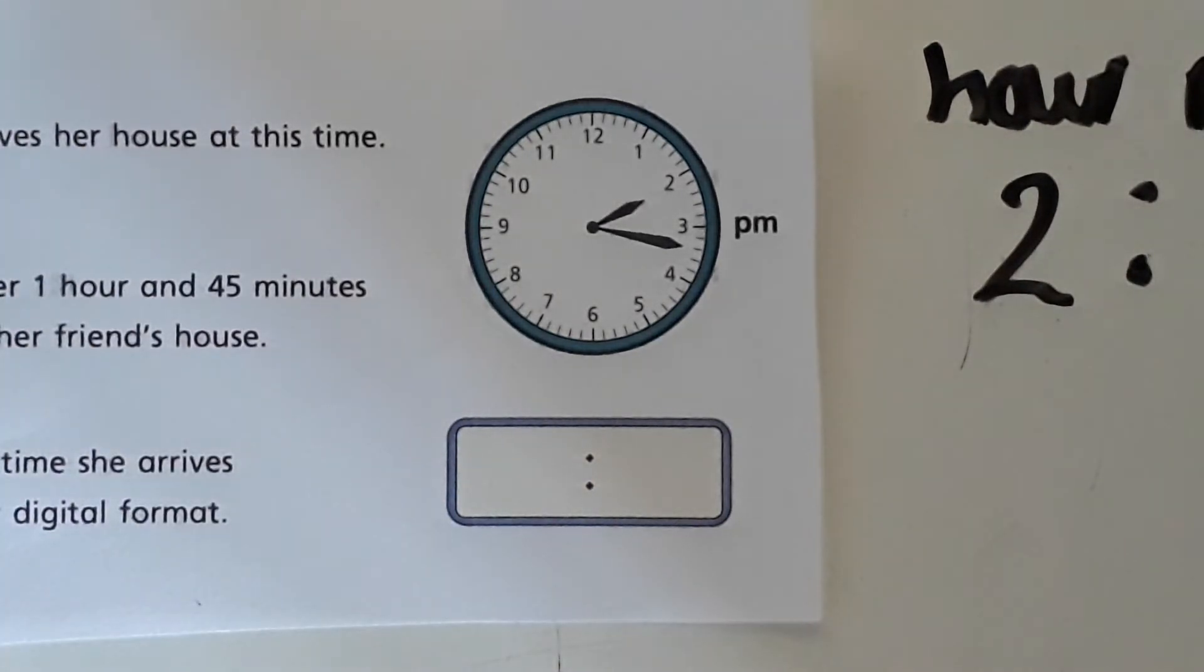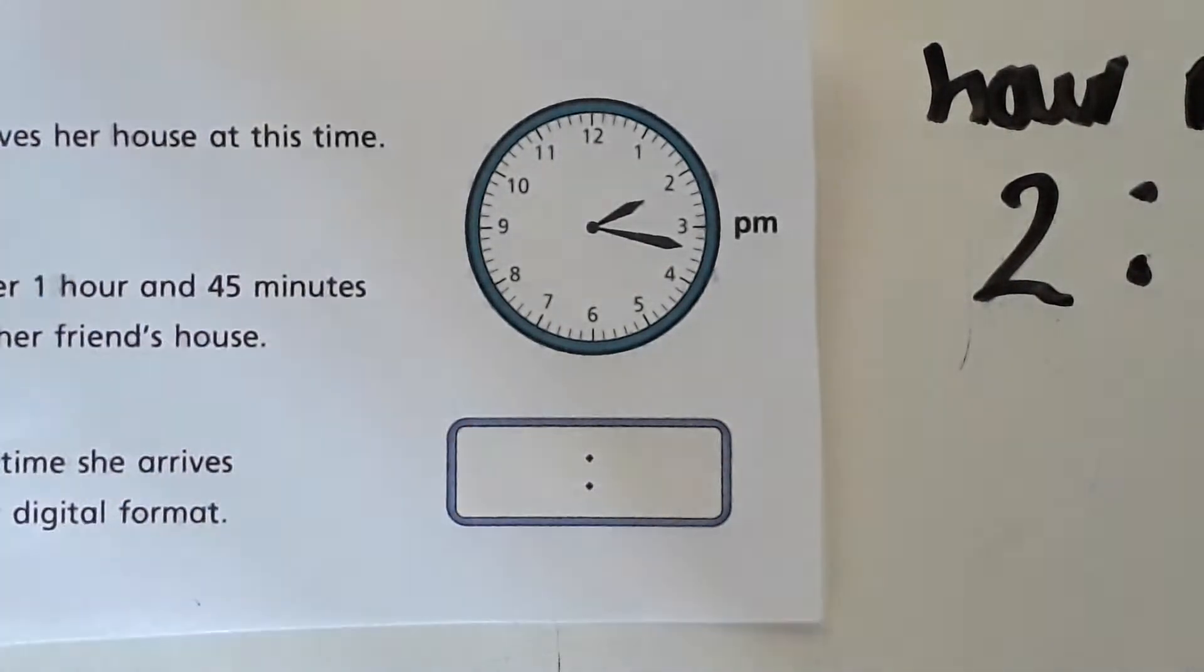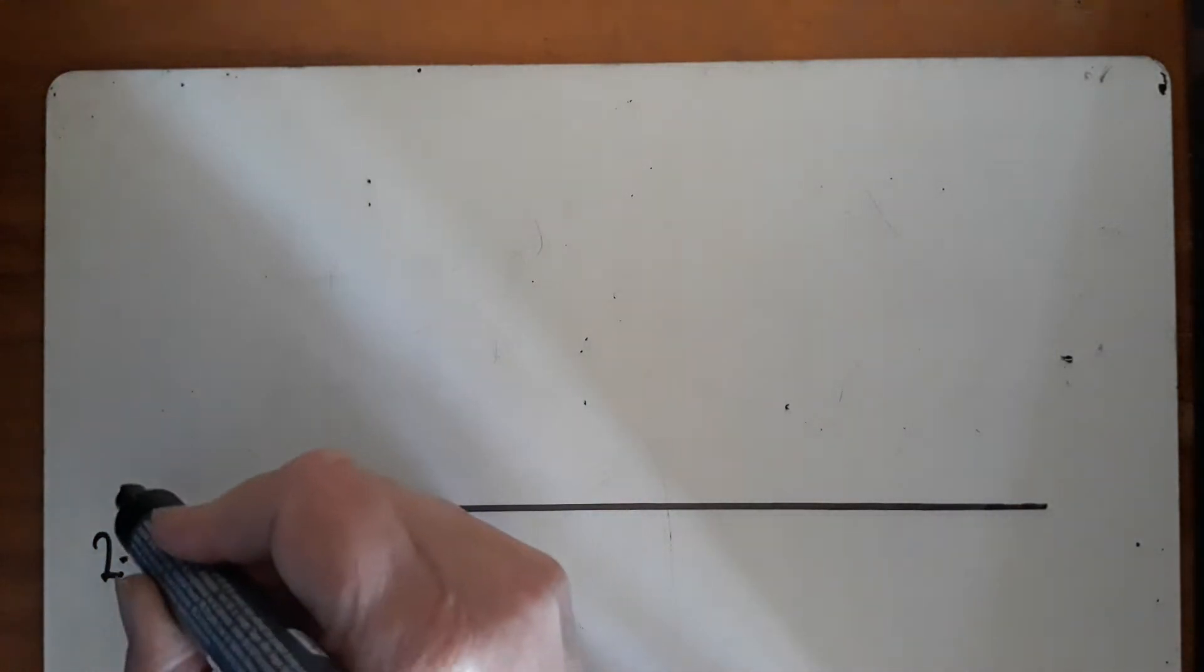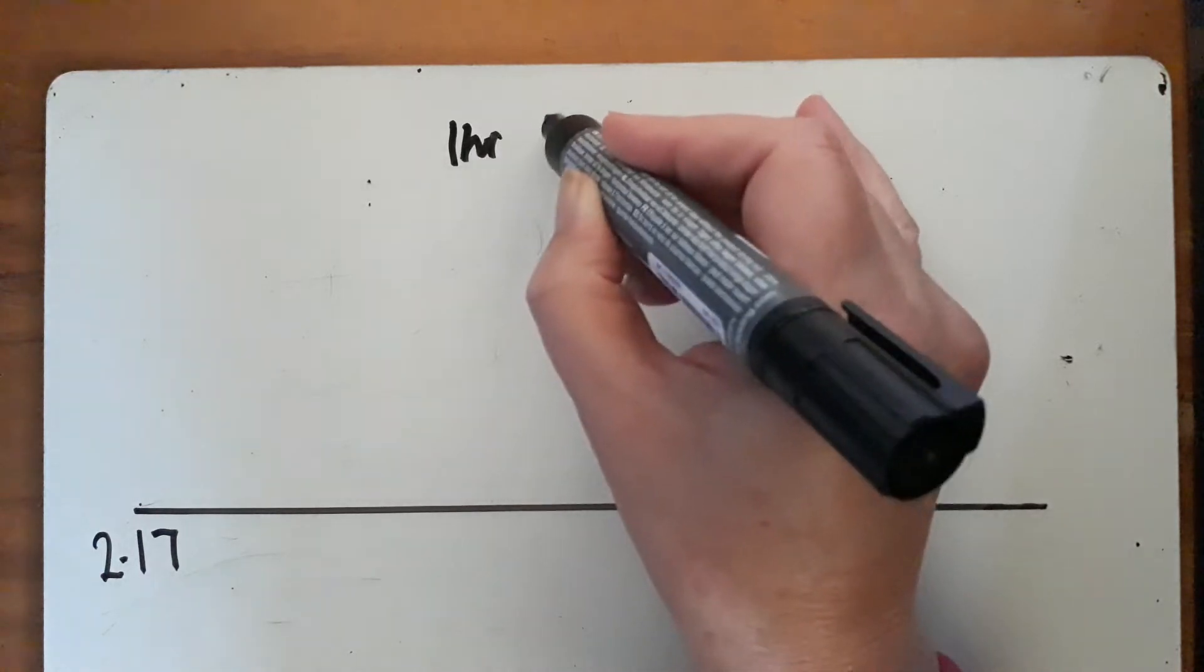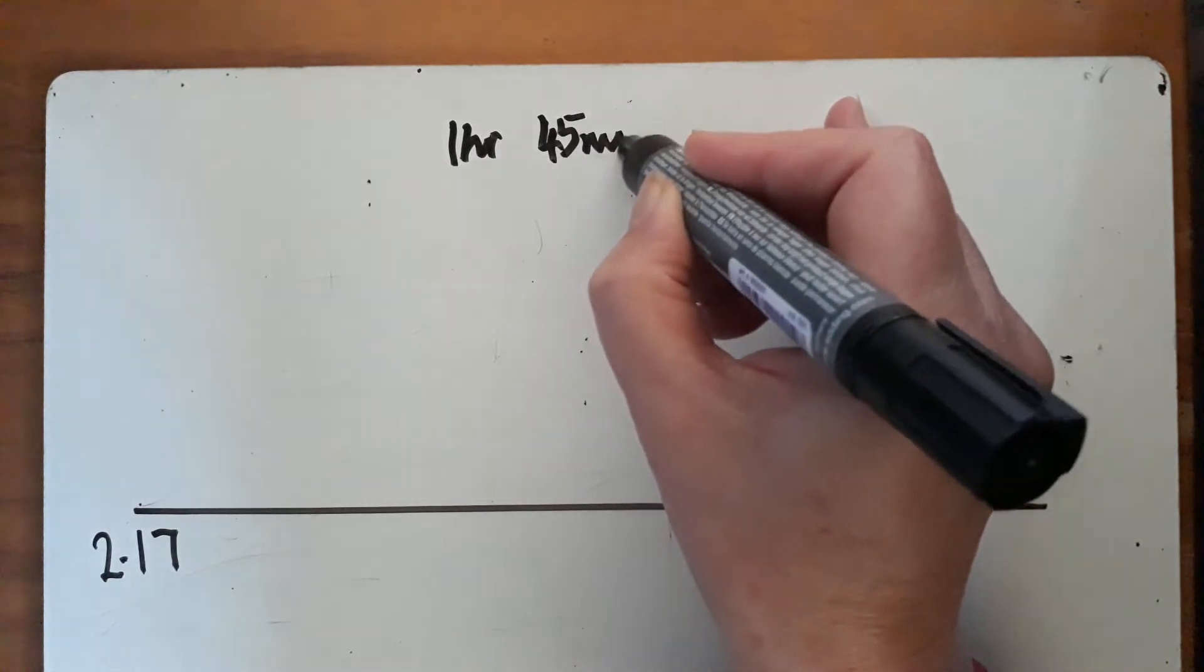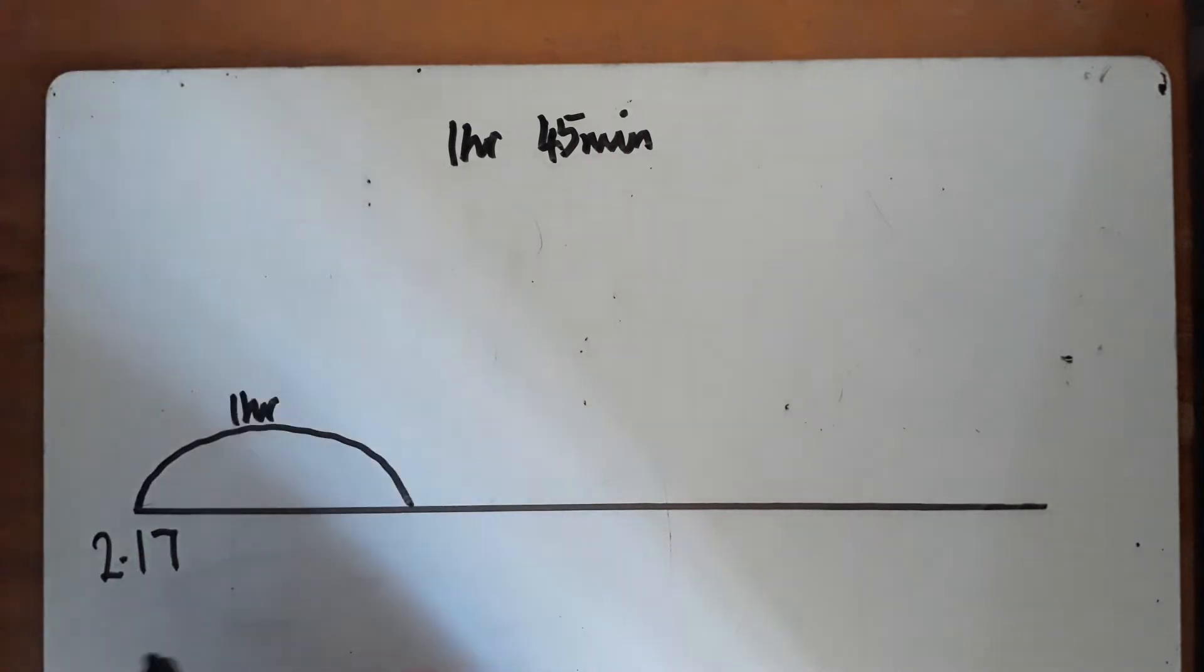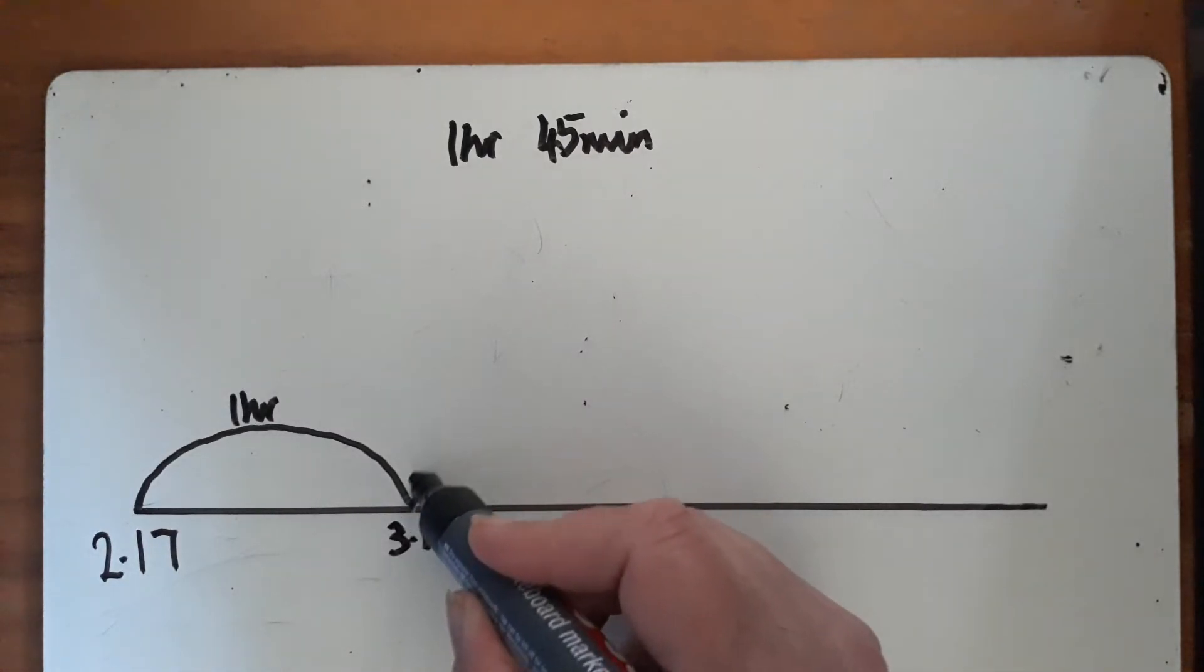We need to add 1 hour and 45 minutes to this time. I'm going to use a number line. I know I'm starting at 2:17 and need to add 1 hour 45 minutes. Starting by adding 1 hour gets us to 3:17, then adding 40 minutes—the minutes in the tens increase by four—gives 3:57.